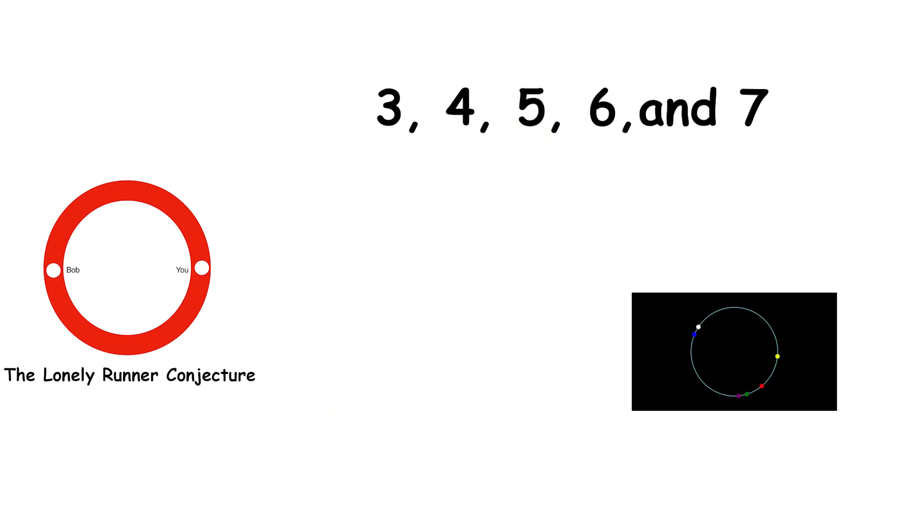For three, four, five, six, and seven kids, smart people have already figured out that each kid will become lonely at some point. But for more than seven kids, we're still not sure. There have been some guesses and ideas, like looking at really big groups of kids running at different speeds, but the problem hasn't been completely solved yet.